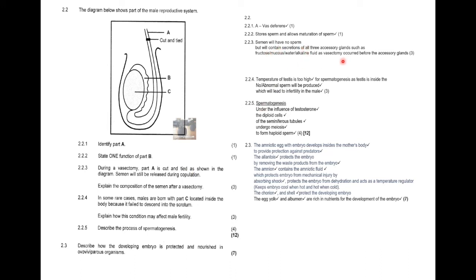You're explaining the composition of the semen — what is in it and why. Question 2.2.4: part C, the testes, is located inside the body. The temperature inside the body is too high, so spermatogenesis won't take place — sperm will be abnormal or there will be no sperm produced, which will lead to infertility. Question 2.2.5: describe spermatogenesis. Under the influence of testosterone, the diploid cells of the seminiferous tubules undergo meiosis to form haploid sperm. That's taken straight from the exam guidelines.